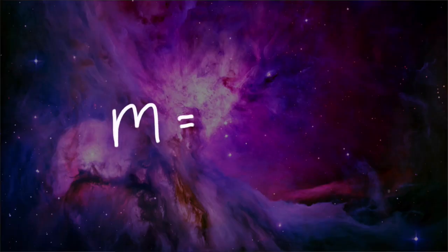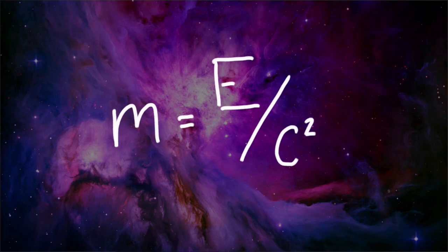The products of a uranium fission or hydrogen fusion reaction weigh ever so slightly less than the original atoms, and that difference is made up by releasing energy — enough to power or level a city. This equation also implies that the more energy an object has, the more mass it has. Mass equals energy divided by the speed of light squared, so more energy equals more mass.